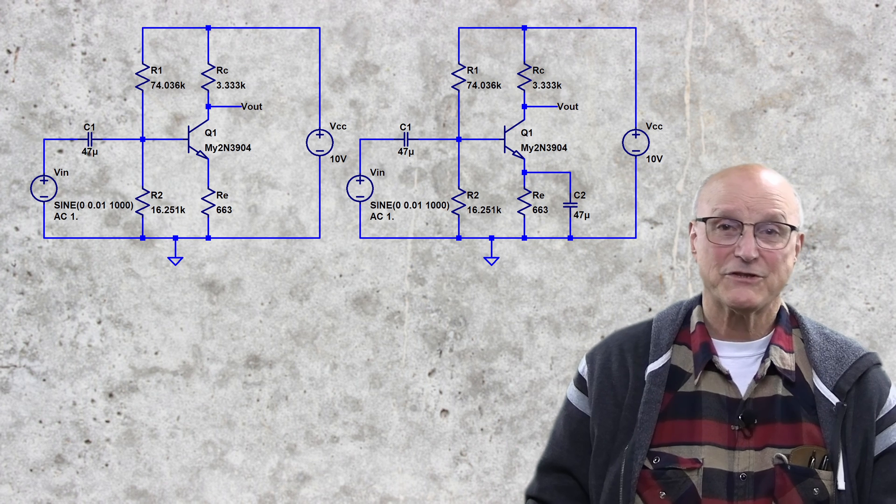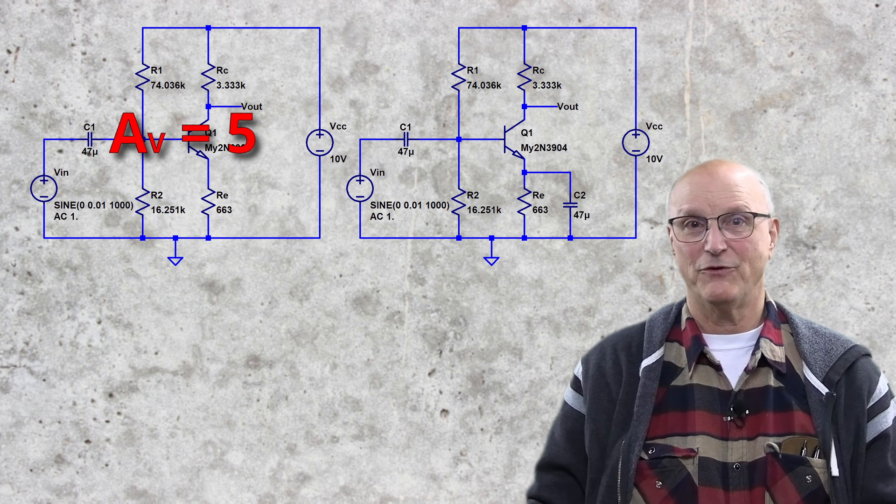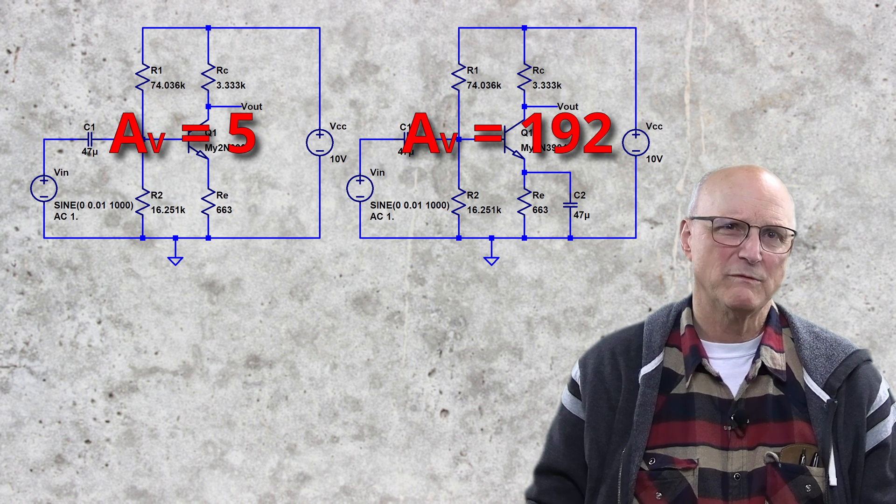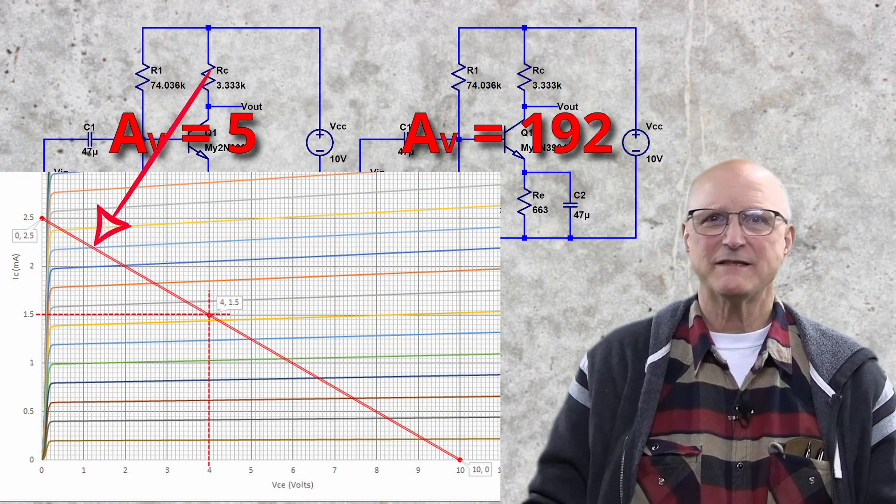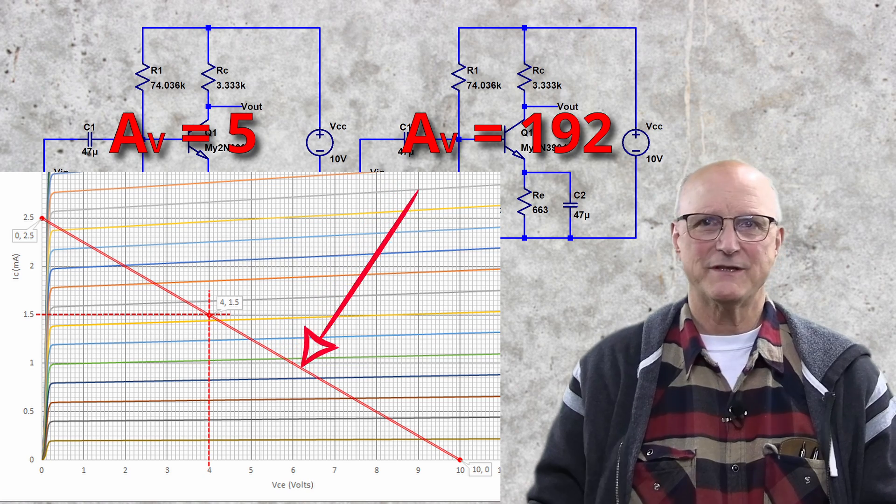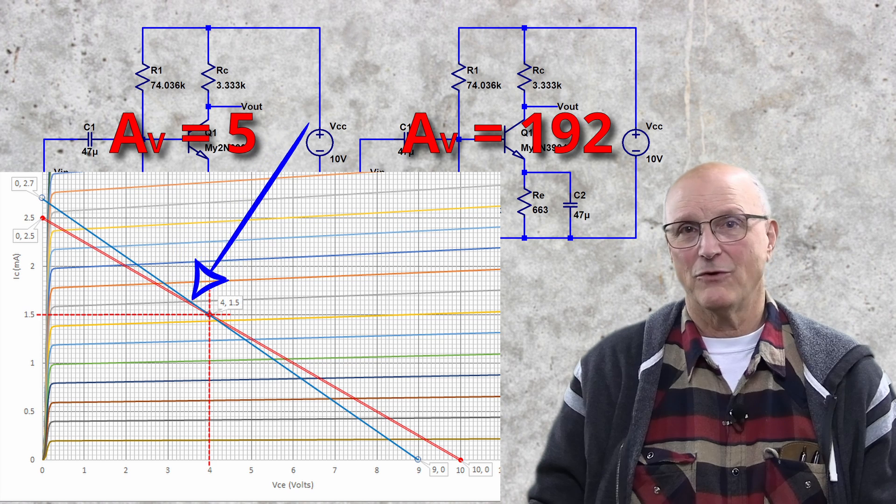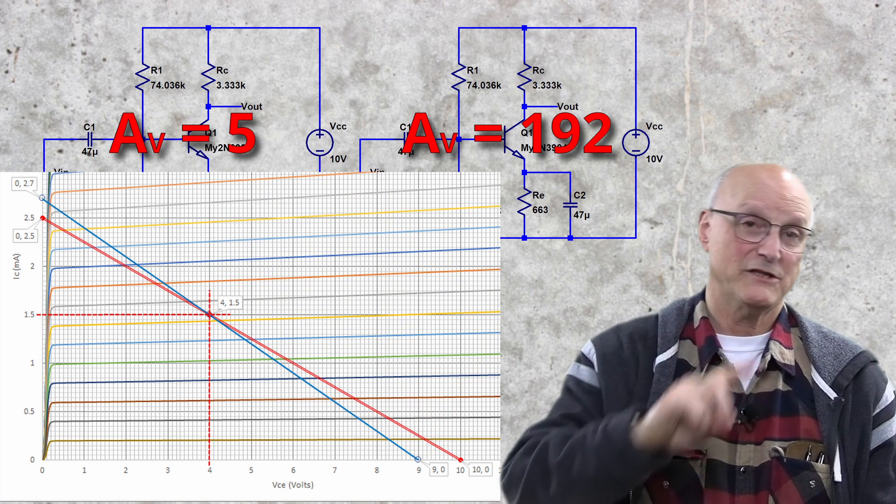Well, the first circuit has a gain of 5. The second has a voltage gain of 192. The AC load line of the first is absolutely identical to its DC load line. And as you can see here, the AC load line of the second is somewhat different.